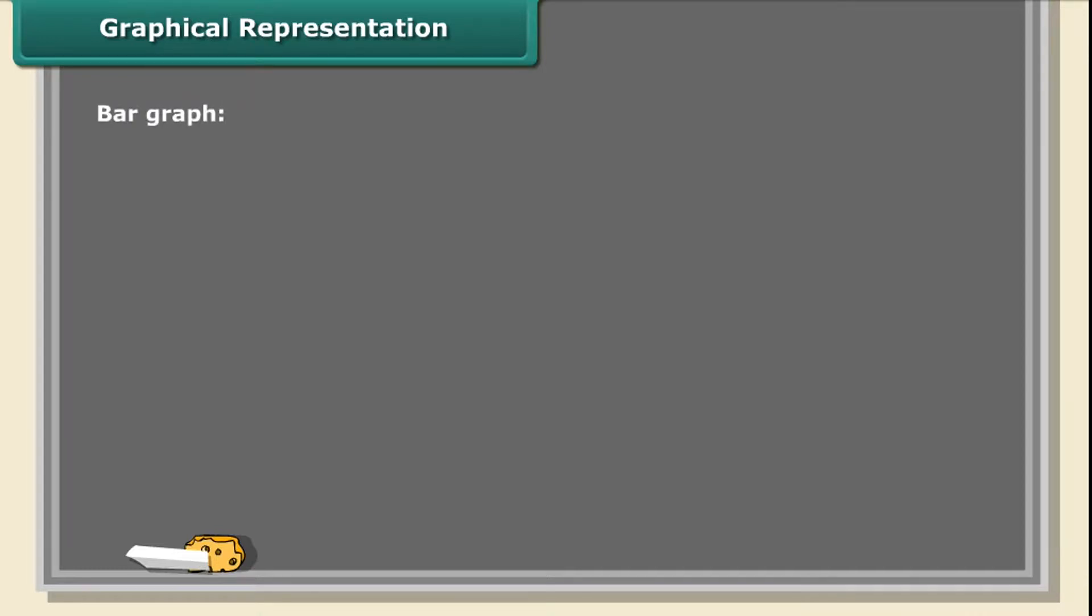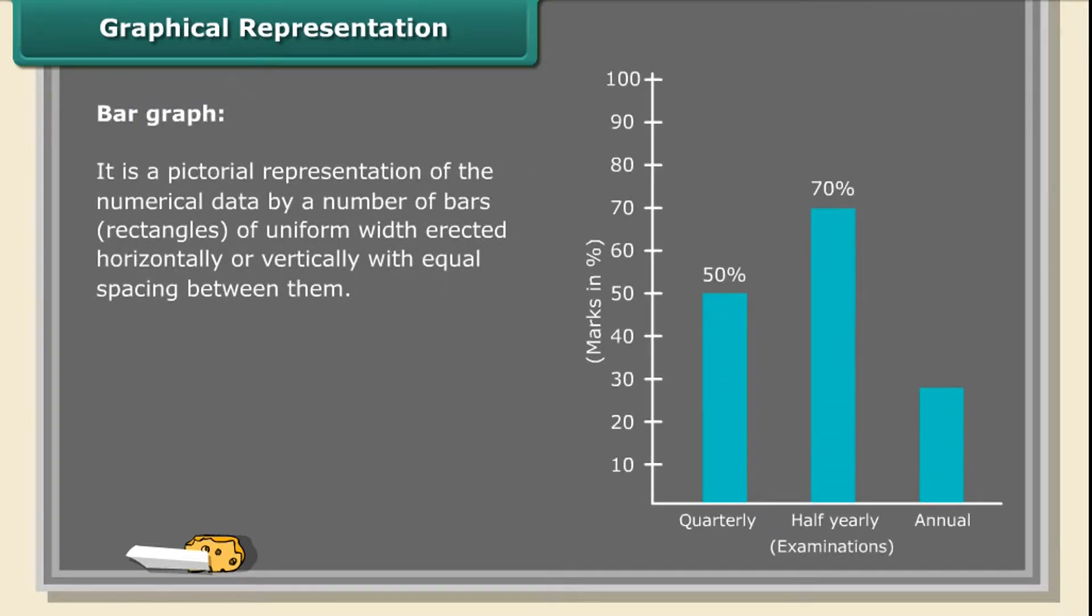Bar Graph. It is a pictorial representation of the numerical data by a number of bars, rectangles of uniform width erected horizontally or vertically with equal spacing between them.